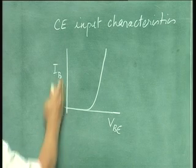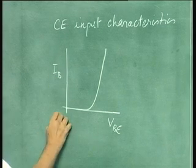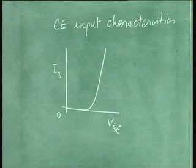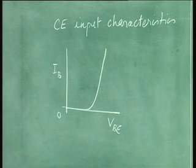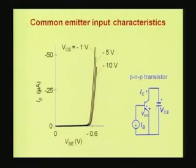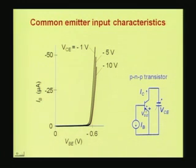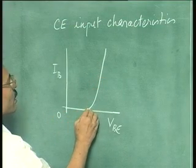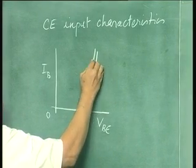This is nothing but a diode-like characteristic. The relation between VBE and IB will be the same as the current-voltage characteristics of the emitter-base diode. Therefore, you are getting the exponential shape. Now, what we need to understand is why these curves depend on the collector-to-emitter voltage. Why is it that if you increase your collector-to-emitter voltage magnitude, your curves are shifting to the right — this is increasing VCE. For a PNP transistor, this VCE is negative, so we put a modulus here. This is because of base width modulation.